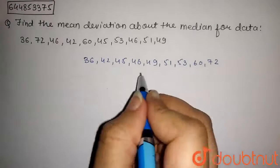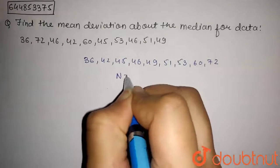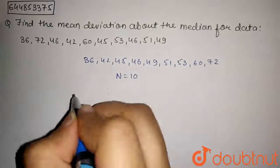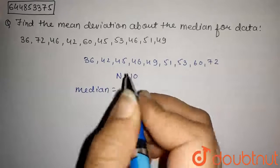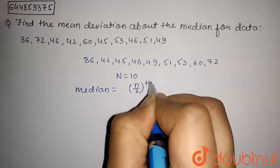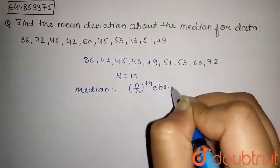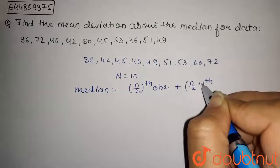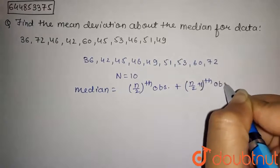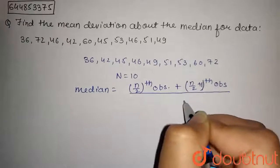Now the number of observations are 10, so n is equal to 10. As n is even, the median will be n by 2th observation plus n by 2 plus 1th observation upon 2.